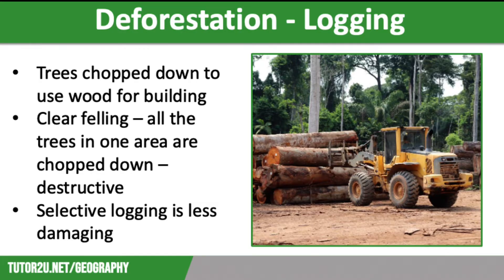However, selective logging is a much better technique for the rainforest. With selective logging, only fully grown trees are cut down, which causes less damage and it means that trees with important ecological value are left unharmed.